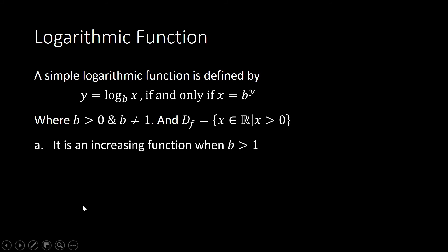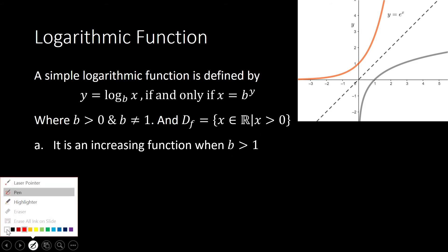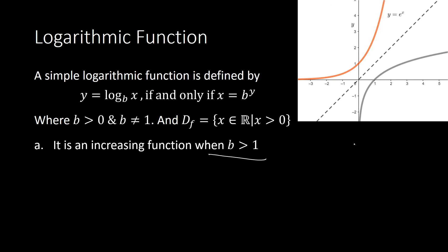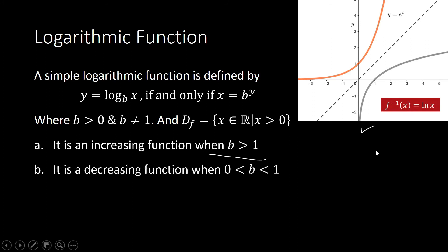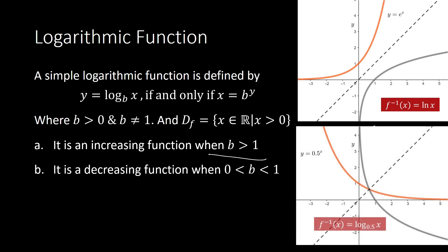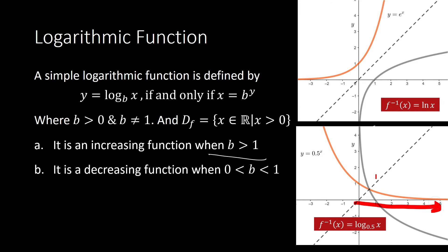Based on the graph, when our base is greater than 1, our function is an increasing function. As x approaches infinity, the log of x base b goes to infinity — it increases without bound. When b is between 0 and 1, what you have is a decreasing function. As x approaches infinity, our logarithmic function decreases without bound — it goes towards negative infinity.